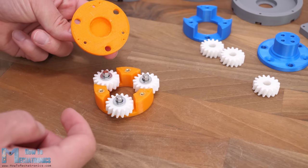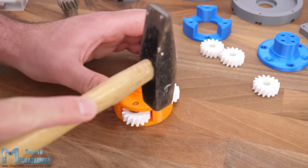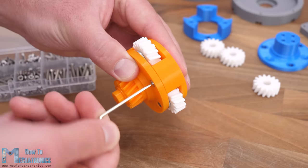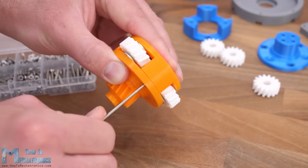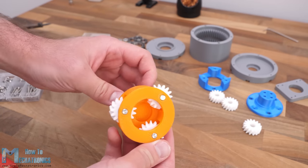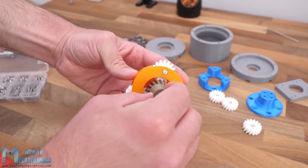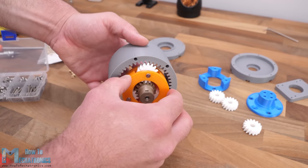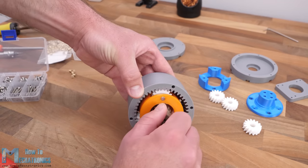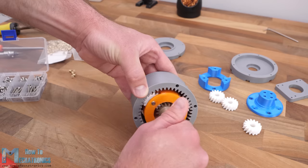Once the 3 planet gears are installed, we can simply insert the other section of the carrier in place and secure them together with the help of some M3 bolts. Here's how the first stage looks like when we insert the input shaft or the sun gear and insert everything into the housing or the ring gear. The carrier rotates 4 times slower than the input shaft.